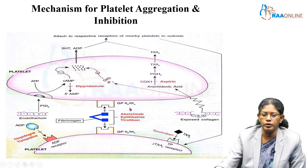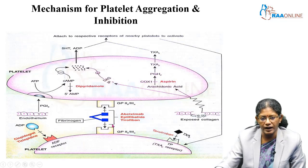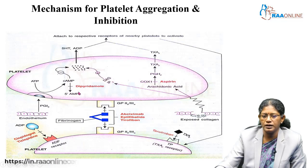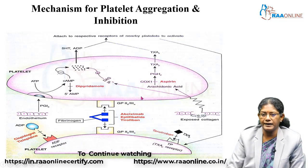GP2b3a inhibitors block the receptor that releases fibrinogen, which has affinity for nearby platelets enabling adhesion. Drugs like abciximab block this GP2b3a receptor, preventing attachment to other platelets. Phosphodiesterase inhibitors like dipyridamole inhibit the enzyme phosphodiesterase, which converts cyclic AMP to 5'-AMP, thus preserving cyclic AMP levels and preventing the adhesion process.